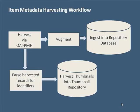Meanwhile, an automated script parses OAI identifiers from the harvested records and uses those identifiers to gather thumbnail images for each item, which will in turn be used by the portal's displays.